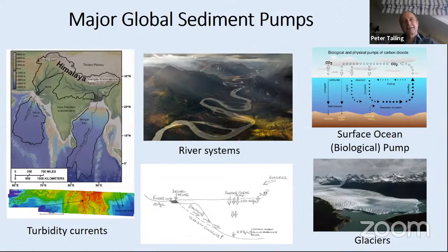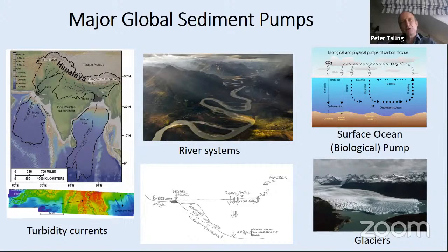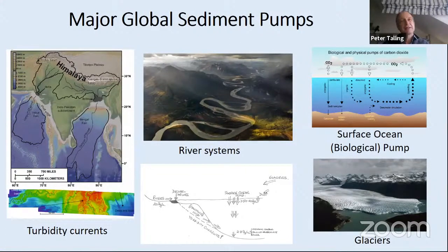These turbidity currents can be very episodic, and individual events can be extremely large. They form channels—shown from the Indus fan—which are even larger in scale than anything rivers produce. The Bengal fan's main channel, if it has the same sinuosity as the mapped portion, is longer than the Amazon or the Nile—it's the longest channel on our planet. As a sediment pump, turbidity currents would rival rivers or the surface ocean pump. Our main problem is we have fewer measurements from turbidity currents to quantify them, but they can rival or exceed any other sediment pump on the planet.